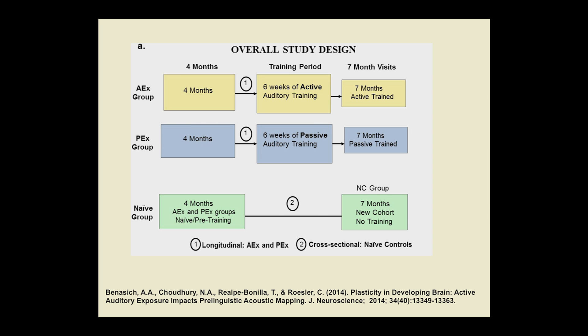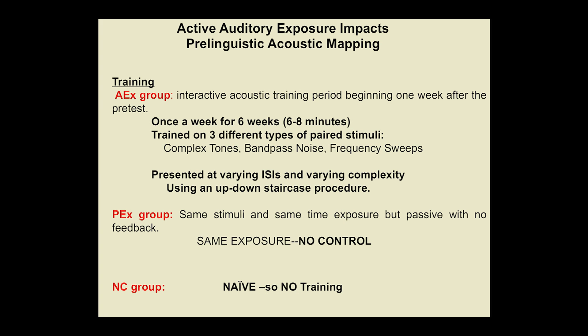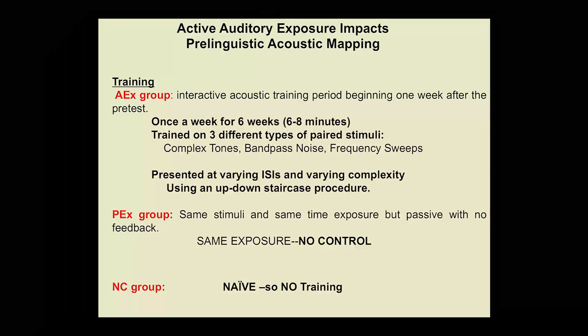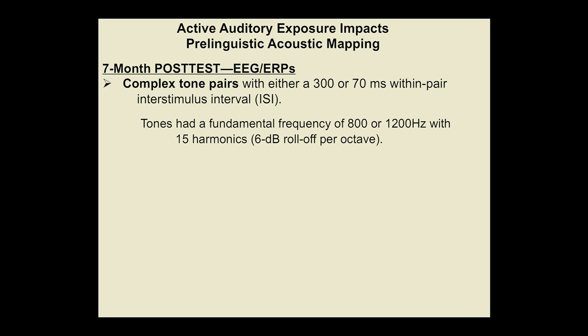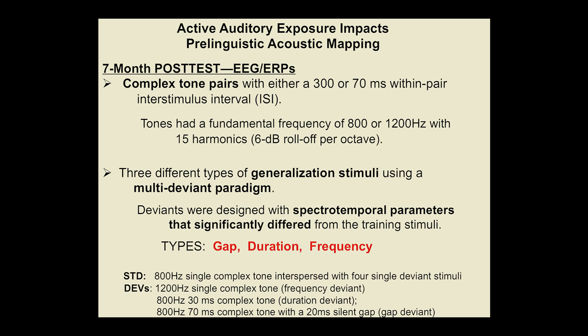The study design had two longitudinal arms — one with active training, one with passive training — and a cross-sectional sample of untrained children. When trained, once a week for six weeks for six to eight minutes, babies were trained on three types of paired stimuli: complex tones, bandpass noise, and frequency sweeps, presented at varying ISIs and varying complexities using an up-down staircase procedure — if the baby got it right, it got harder; wrong, it got easier. The passive group received the same stimuli and time exposure but with no feedback. After training, we collected ERP and EEG data for trained stimuli as well as generalization stimuli: deviants with spectrotemporal parameters significantly different from the training stimuli — one with a gap, one with differing duration, and one with frequency.